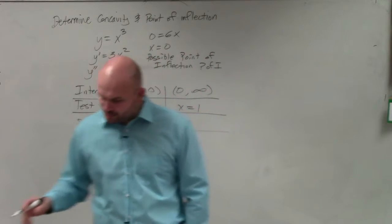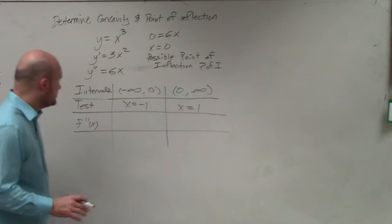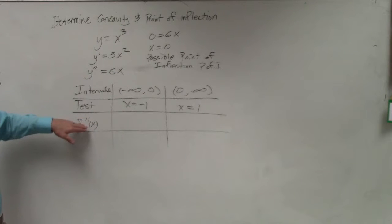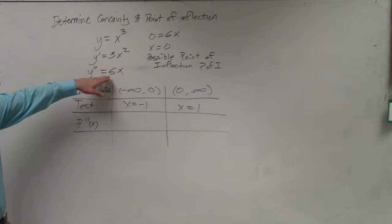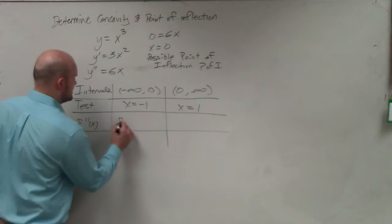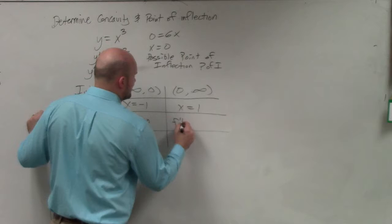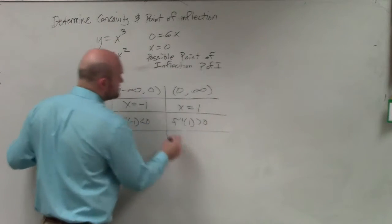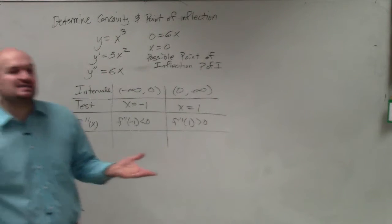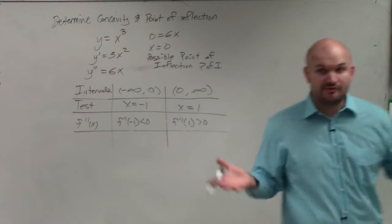So when I go ahead and take the double derivative and plug in negative 1, obviously negative 1 times 6 is less than 0. So I can say f double prime of negative 1 is going to be less than 0. f double prime of 1 has to be greater than 0. All I'm doing is plugging in 1 and determining, is it positive or negative? Just like we did for the first derivative.